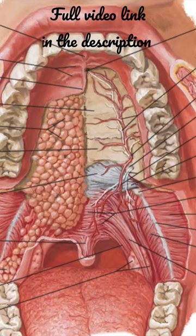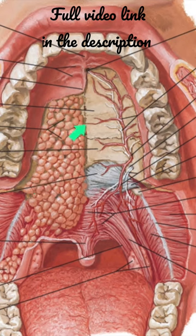Here you can see this is the hard palate and this is the mucoperiosteum, and here you can see the palatine glands. When you see the mucoperiosteum, it presents a median raphe.